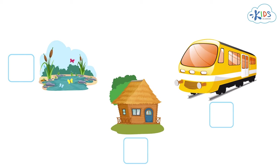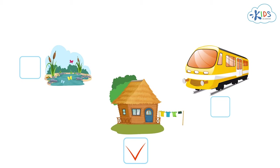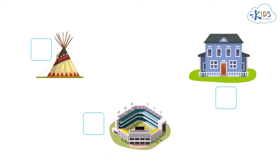Which of these is a home? The hut. A hut is a small house made of wood, mud, grass, or stones. People do not live in ponds or trains. Nice job!